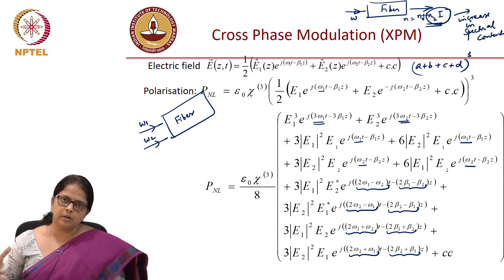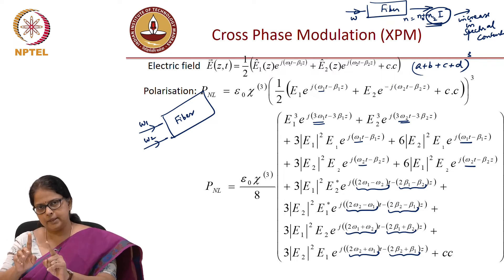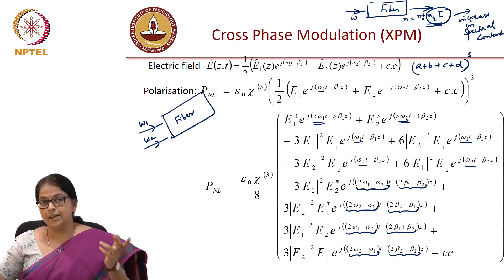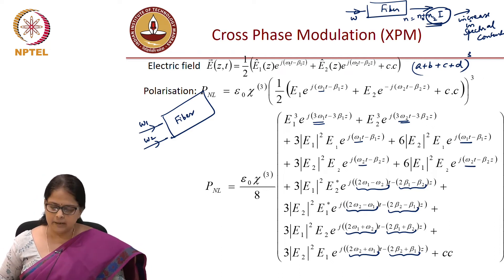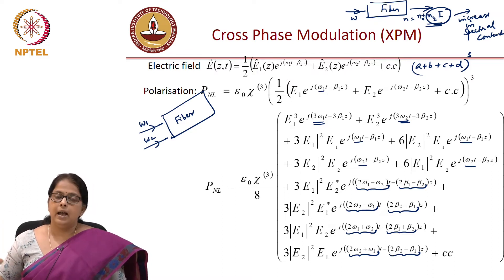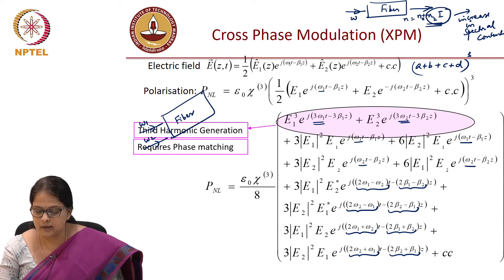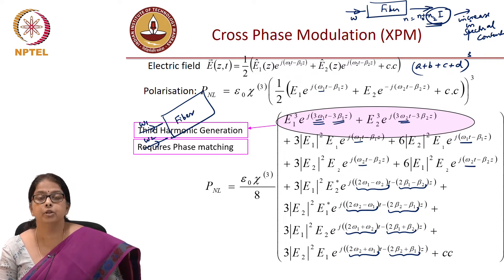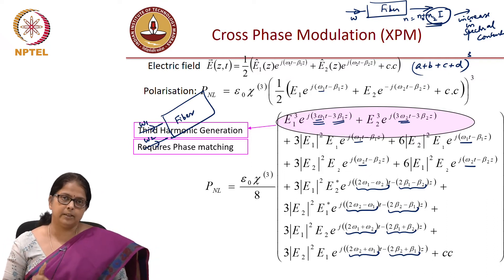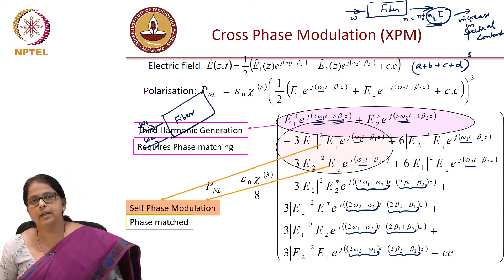These terms give us a lot of insight into what is actually happening in the system. All we did was send two frequencies with slightly larger power to start seeing non-linear effects. The induced polarization has a linear response plus a non-linear response at several frequencies. You have frequencies corresponding to third harmonic generation — 3ω₁ should be generated with phase 3β₁, so it requires phase matching, which we will discuss a little later. There are also frequencies ω₁ and ω₂ corresponding to self-phase modulation.